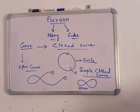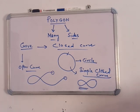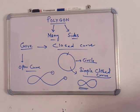When we discuss about the polygon, the first thing is the curve. There are mainly two types of curve: closed curve and open curve. The closed curve means when the curve's beginning and ending point are the same. See the figure — circle. The ending point and the beginning point are the same.